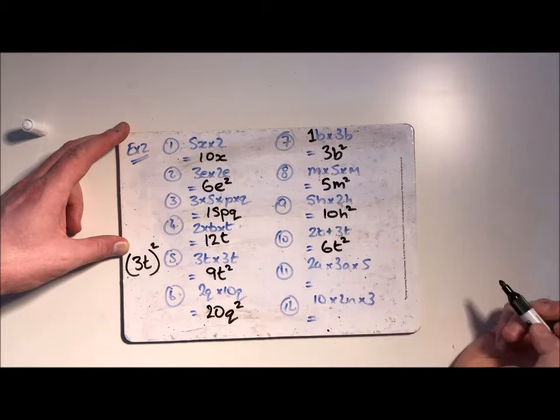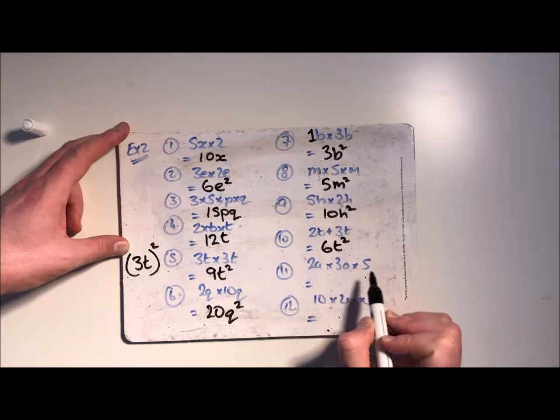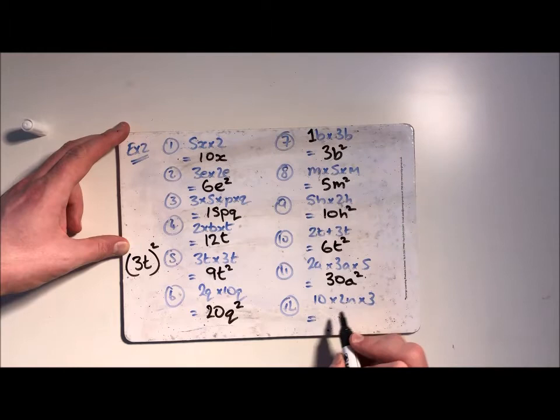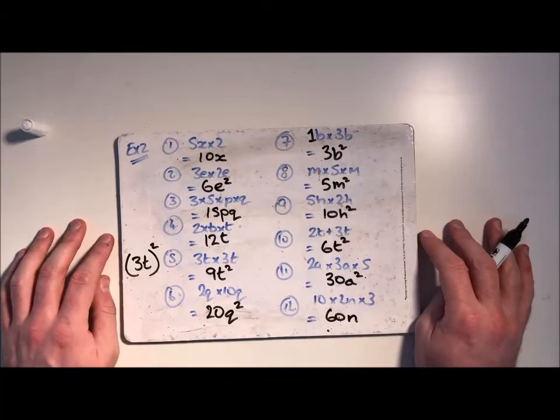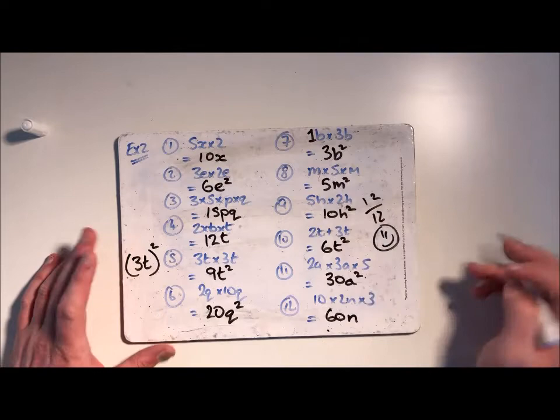Now here we've got three numbers, so we just do them literally: 2 times 3 is 6, times 5 is 30, and a times a is a squared. 10 times 3 is 30 times 2 is 60, and then there's just an n on its own, so 60n. Again, pause the video if you want to and get your answers. That one also out of 12, and of course we're doing well with full marks so far.